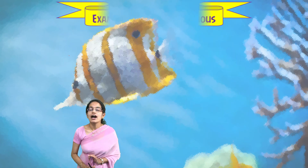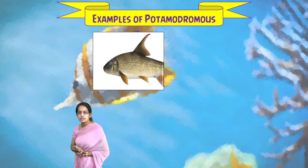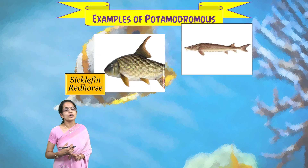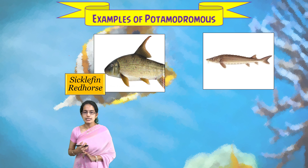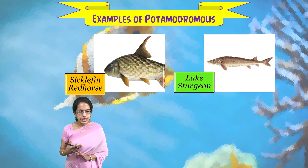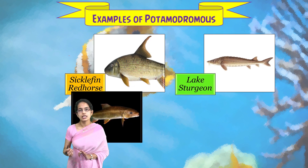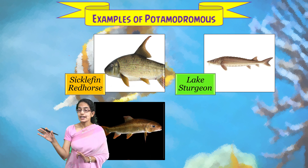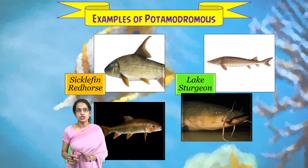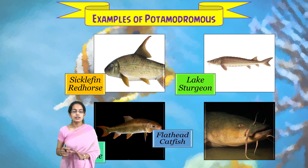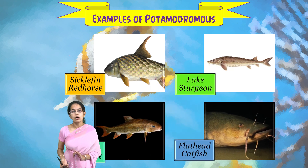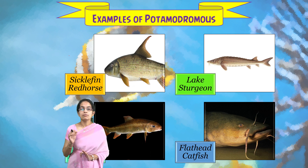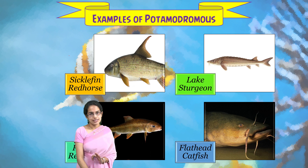Good examples of Potimidromus species include Lake Sturgeon, the Sickle Fin Red Horse, Flat-headed Catfish, and Robust Red Horse.